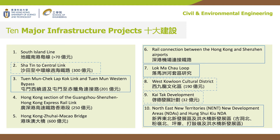Some of the 10 major infrastructure projects have been completed, such as the South Island Line, so that we now have an MTR station at Ocean Park. We have also completed the Express Rail Link and the Hong Kong–Zhuhai–Macao Bridge. Some are still ongoing, such as the Shatin to Central Link, West Kowloon Cultural District, and the Kai Tak area. Some, like the Lok Ma Chau area and Hung Shui Kiu area, are still far from finished — so you don't need to worry that there will be no projects in the future.